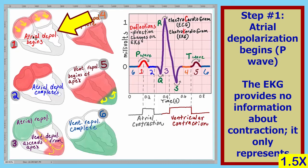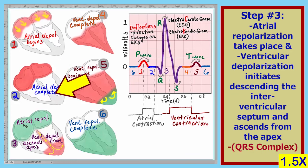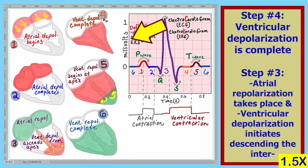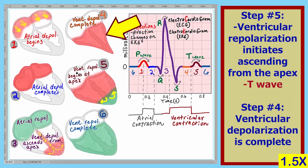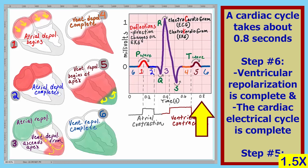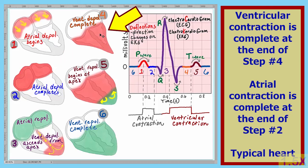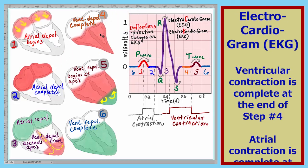Let's review the information in this lecture. In step one, atrial depolarization is shown as the P wave. In step two, atrial depolarization is complete. In step three, atrial repolarization and ventricular depolarization — beginning at the apex and ascending the heart — are shown as the QRS complex. In step four, ventricular depolarization is complete. In step five, ventricular repolarization beginning at the apex is shown as the T wave. In step six, ventricular repolarization is complete and the cardiac cycle ends. An entire heart cycle takes approximately 0.8 seconds, about 75 heartbeats per minute. Atrial contraction occurs at the end of step two, and ventricular contraction at the end of step four. This completes our discussion of the EKG, or the electrocardiogram. I hope you've learned a lot. Thank you.